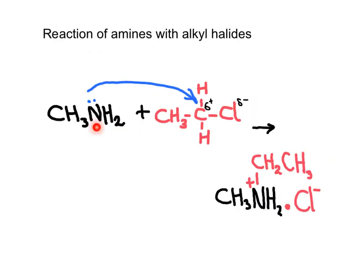The last reaction for the family of amines is the reaction between an amine — which could be primary, secondary, or tertiary — with what we call a haloalkane or alkyl halide. This is a haloalkane because we have a chlorine; it could be a bromine. There is a difference in electronegativity values between the halogen and carbon, so the chlorine is pulling electron density from the carbon, making that carbon partially positively charged. Because of this, we can have electron density from the nitrogen providing both electrons to make a brand new covalent bond — this is called a coordinate covalent bond.